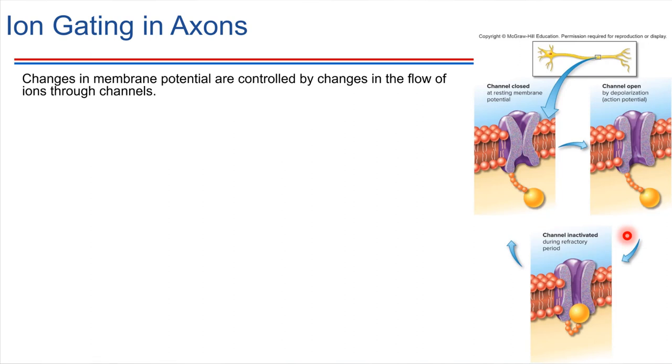So we've said that the membrane potential of a cell can be changed by allowing ions to flow across the membrane from one side to the other. Let's get into some of the details of how that actually can happen.